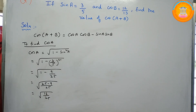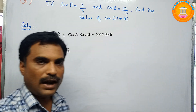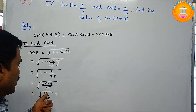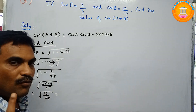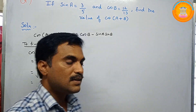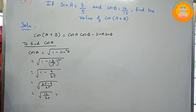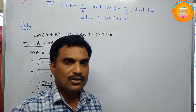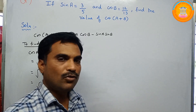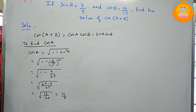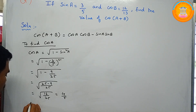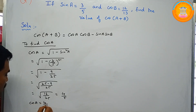Now, what is the square root of 16? That is 4. Apply the square root to numerator and denominator: 16 is 4 squared, so square root of 16 is 4; similarly 25 is 5 squared, so square root of 25 is 5. Therefore cos a equals 4 by 5.